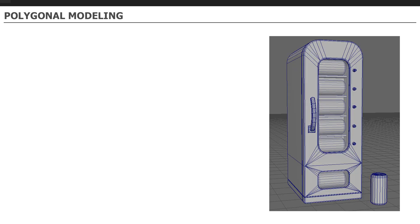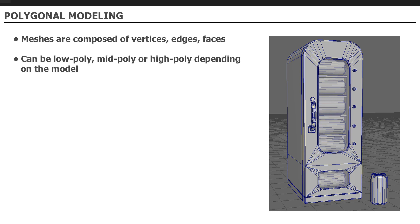The first method is Polygonal Modeling. In this method, meshes are composed of vertices, edges, and faces. Your meshes can be low poly, mid poly, or high poly, depending on the model and your end result. This method is what's primarily used for game development and game modeling, but it's also used in film, animation, as well as rendering your portfolio shots.